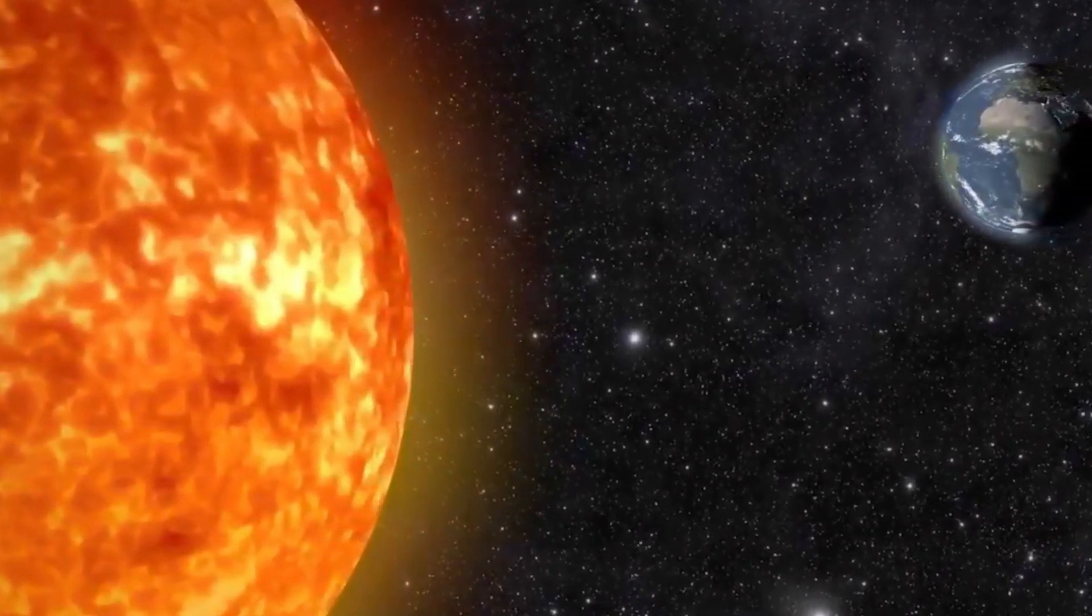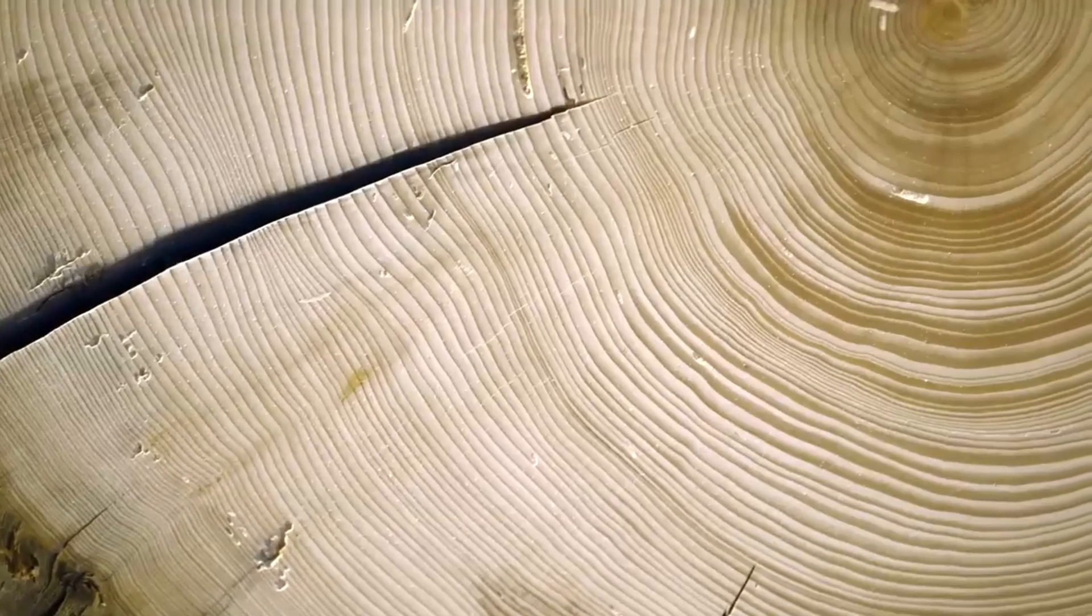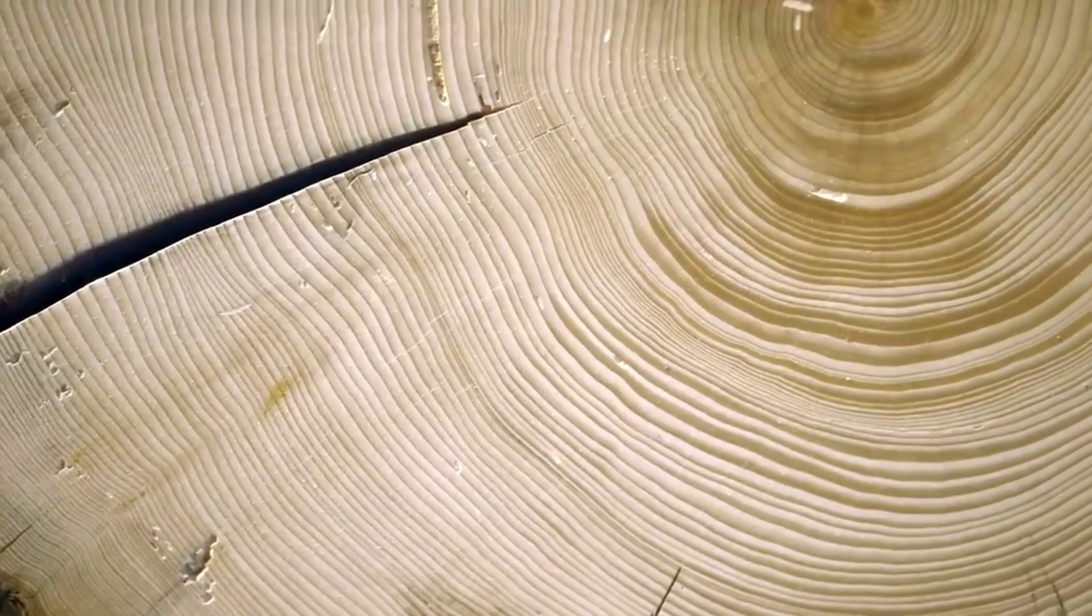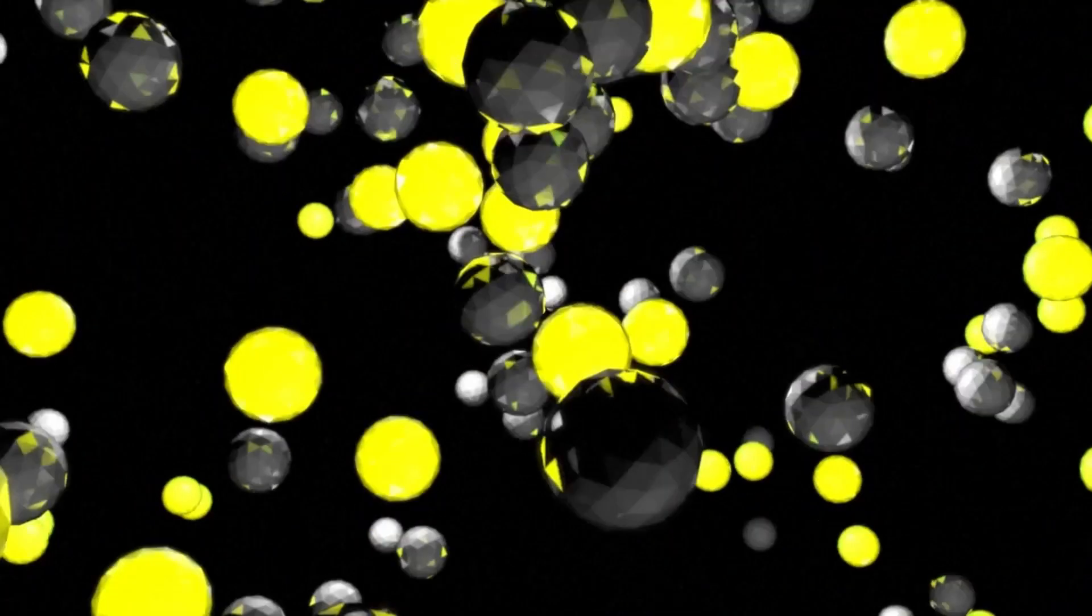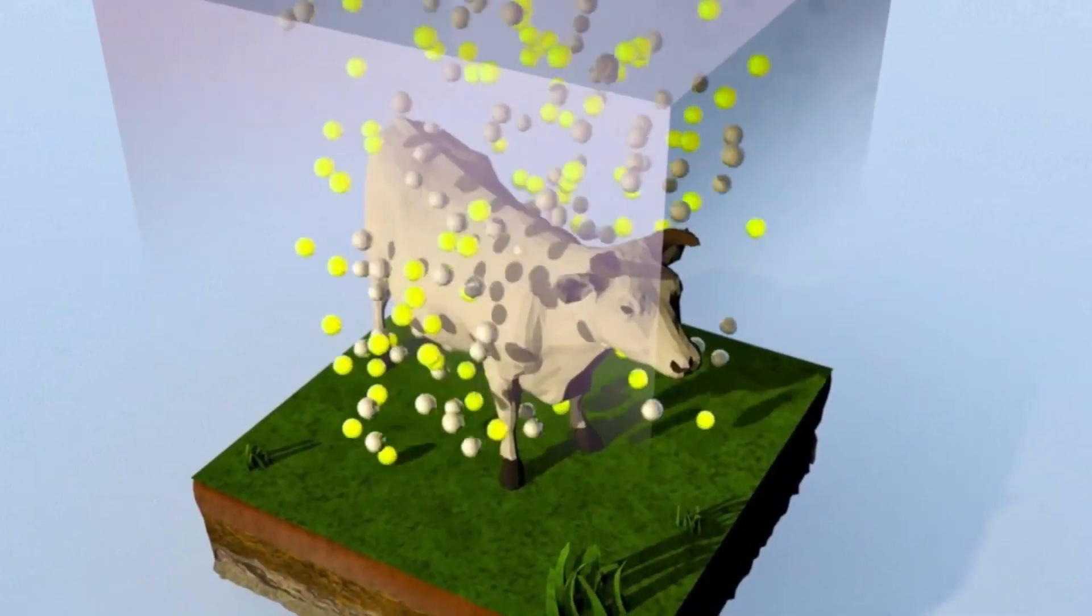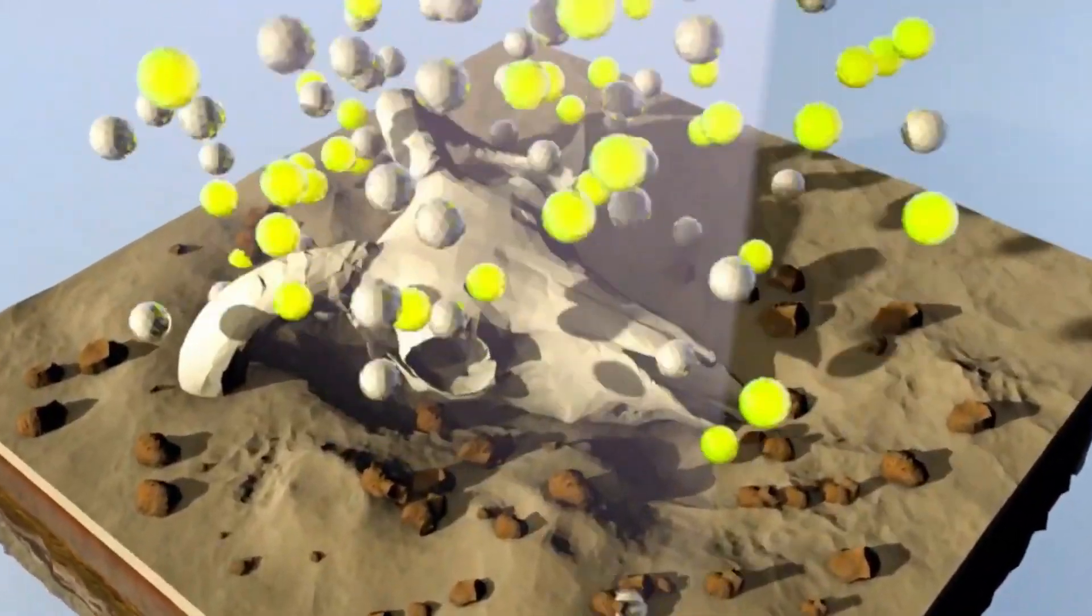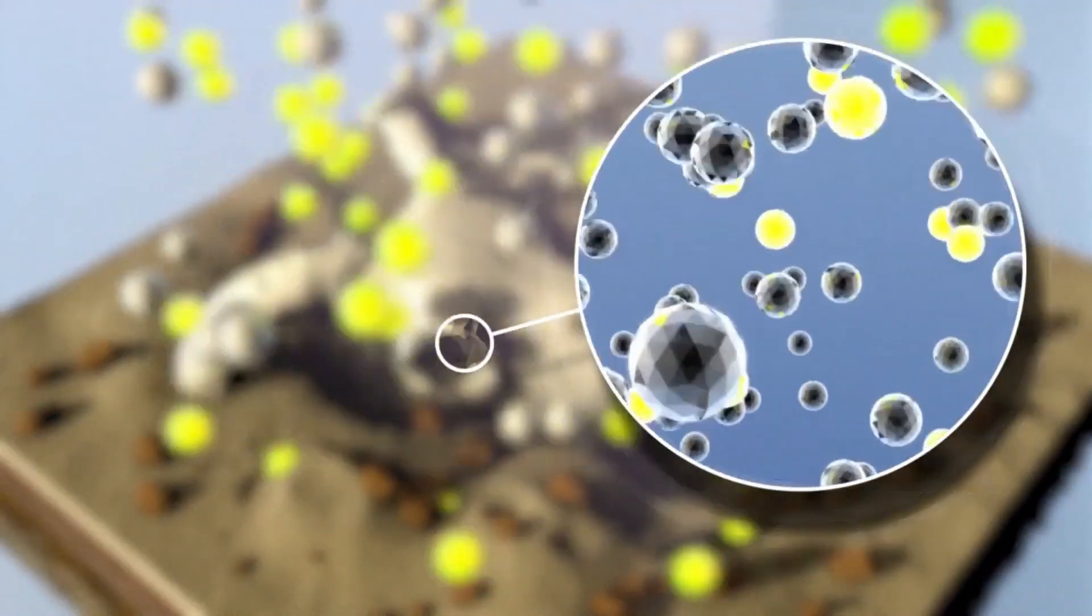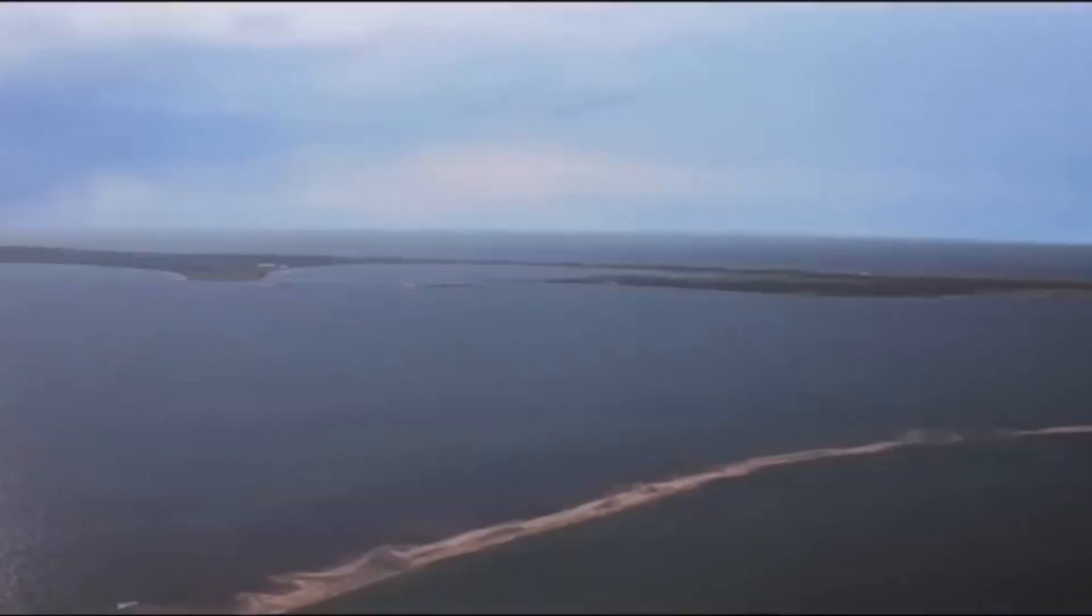However, scientists have managed to uncover traces of this solar storm in the most unexpected places: the ancient tree rings in the picturesque French Alps and ice cores in Greenland. You see, radiocarbon, which can be found in various parts of our planet, such as plants, animals, people, and even oceans, also finds its way into tree rings. These tree rings now act as remarkable time capsules, preserving records of events that occurred thousands of years ago.